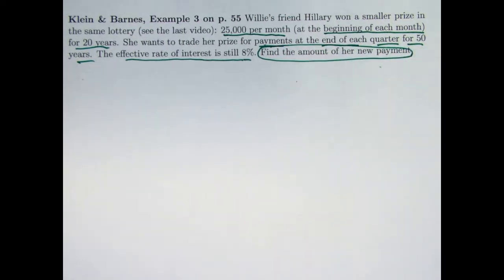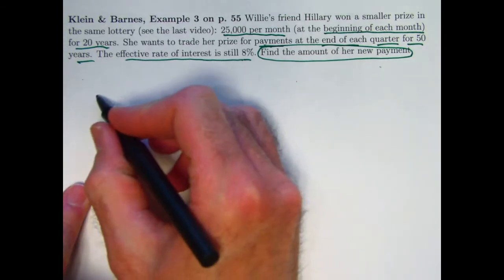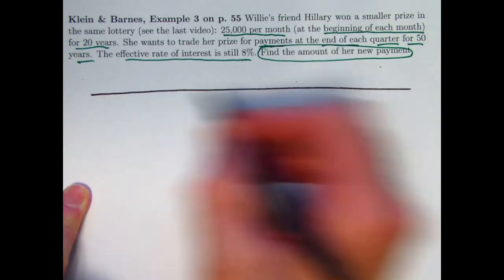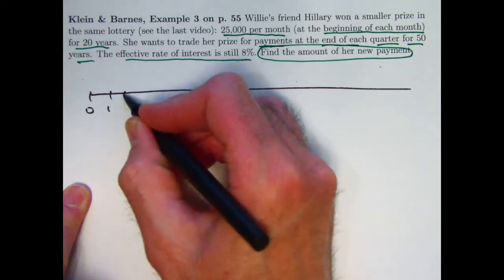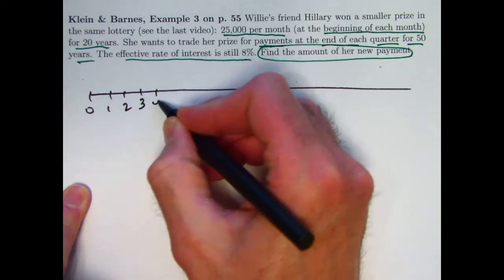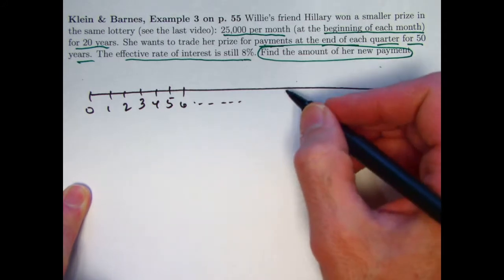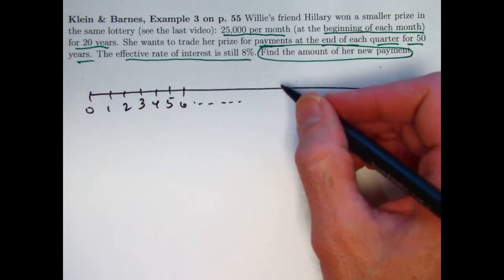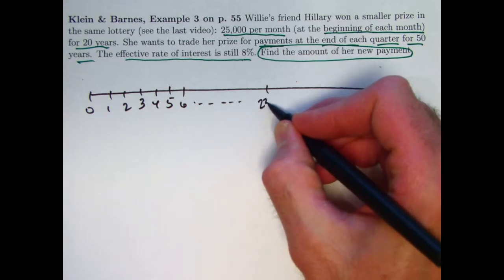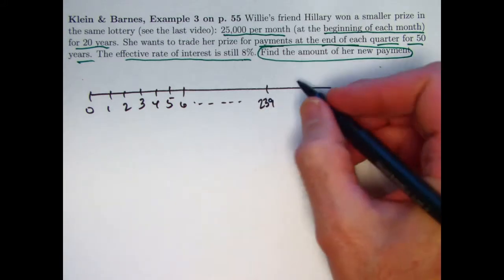We'll call that x and we'll solve for x. So our number line here, our timeline, let's say, is in months. So these are months since time zero. This would be half a year right there. The first annuity is for 20 years, which is 240 months. It's an annuity due. So the last payment will be at month 239.